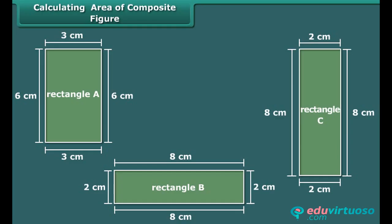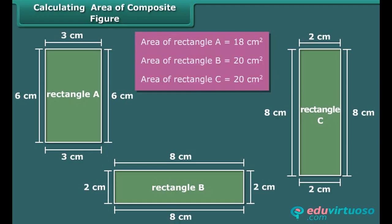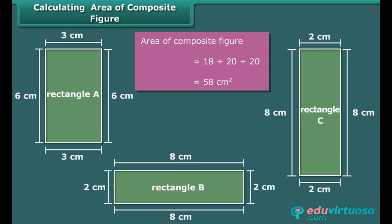Here we can divide the given composite figure into 3 rectangles. Area of rectangle A is 18 cm square. Areas of rectangle B and C are the same, that is 20 cm square. Thus, the area of the composite figure is 18 plus 20 plus 20, which is equal to 58 cm square.